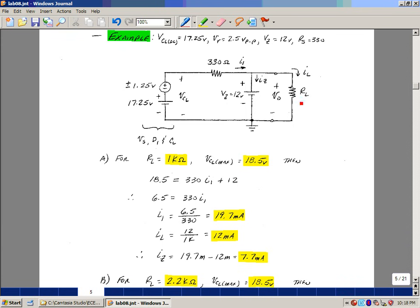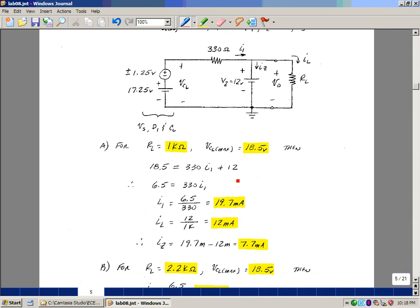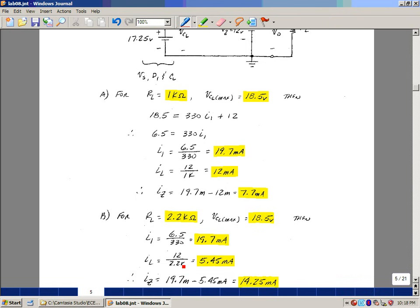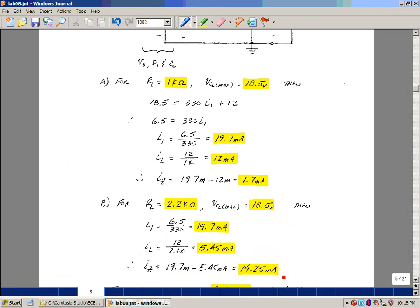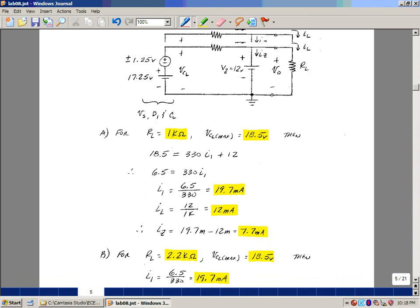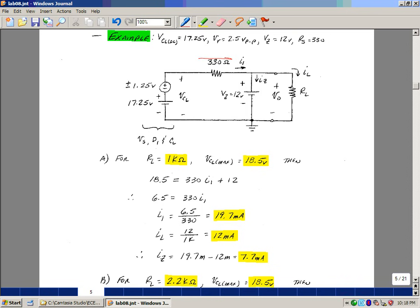Suppose the load now changes to 2.2k. Well this equation here doesn't change. It's still 18 and a half volts. It's at one instant in time. I1 times 330 plus 12. So I still have the same current in here, but the load current now is 12 divided by 2.2k which is 5.45. So what's left over for the zener is 14.25 milliamps. So what's going on here is that there's 19.7 milliamps in this resistor when this is 18 and a half volts. And depending on the load, as the music's getting louder and softer, I'm going to be taking a piece of that 19.7 milliamps. And what's ever left over just goes into this zener diode which is acting like a battery being charged.